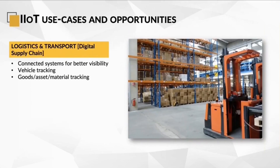IoT solutions can help enable much better visibility into the supply chain by way of deploying connected systems. These solutions can be used for vehicle tracking — where goods are in transit — and goods tracking on the individual level can also help identify the health of each item. It's a game changer for solutions like cold chain, where you have temperature-sensitive material in transit.